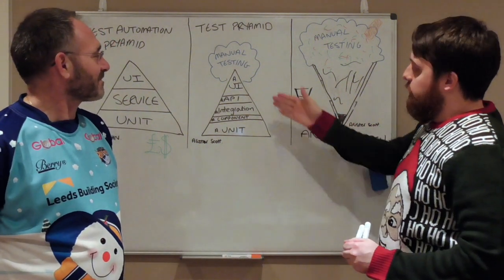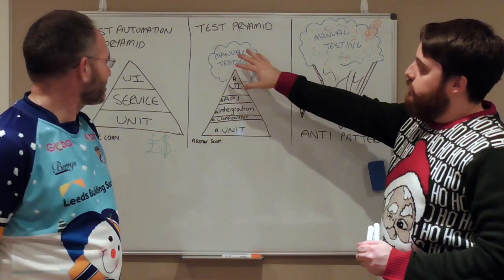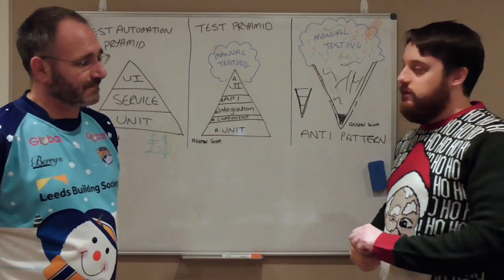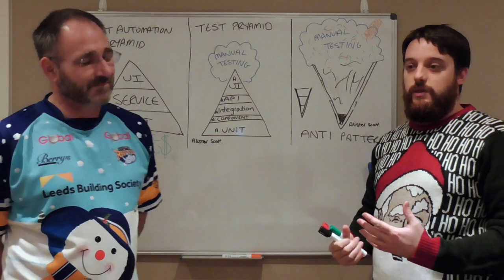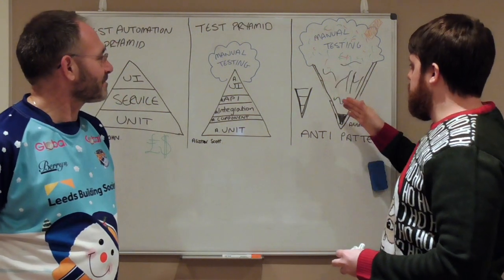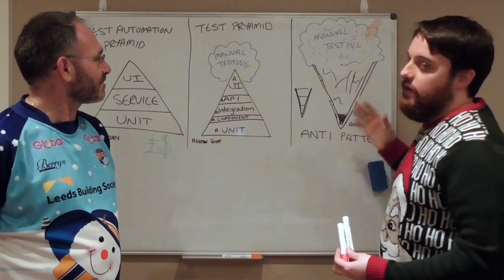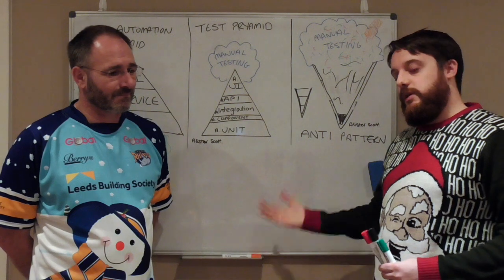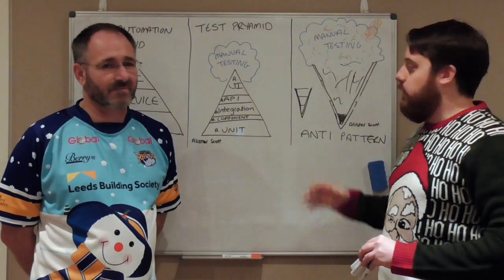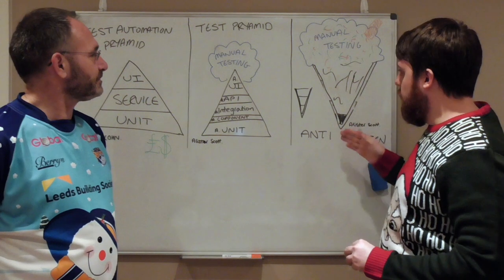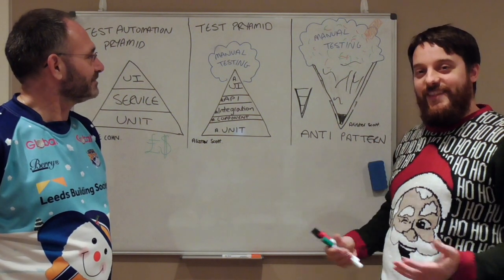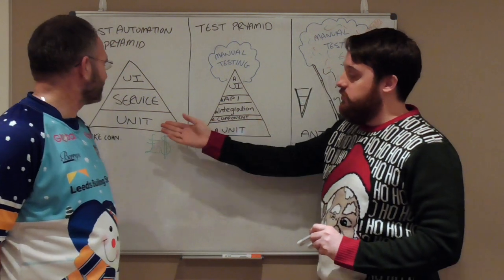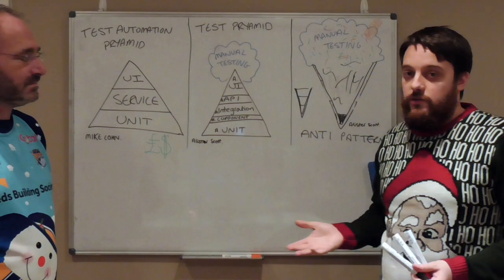The problem was that we dropped the word automation. Just for automation, there's very little wrong with the original pyramid — it does make good sense. As soon as we got rid of the word automation and started just putting manual testing on top like a cloud, it didn't make sense. It didn't show that the two are tightly integrated — you can't do one without the other. I tried to show that they are one thing. You're not trying to solve the automation problem or the manual testing problem — you're trying to solve the testing problem.